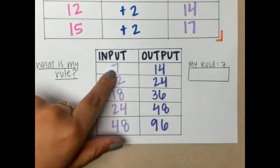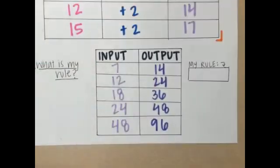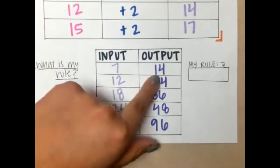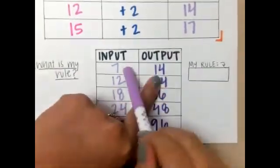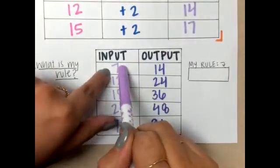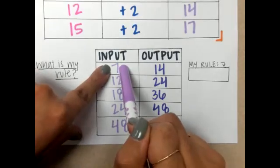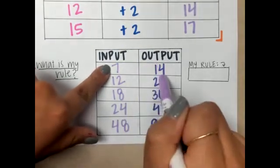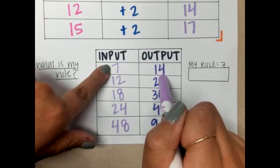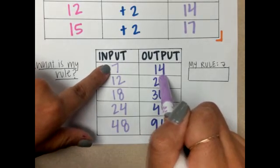How else can I get 14 with an input of 7? I know that my number is going up, so I can't subtract from this number because then that would give me a smaller number. I tried adding, but that didn't work. What if I multiply?